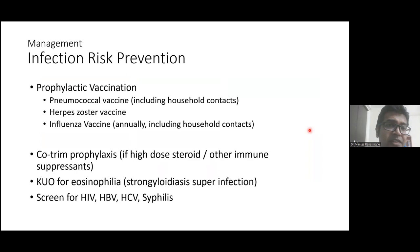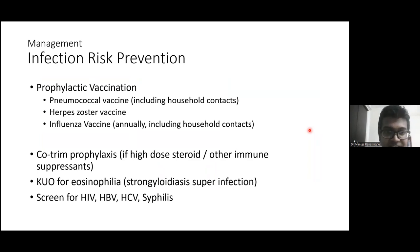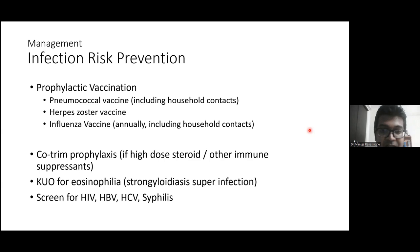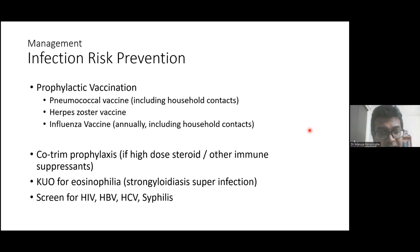Nephrotic patients have a high susceptibility to infections. Preventive measures include prophylactic vaccinations: pneumococcal vaccine, herpes zoster vaccine, and influenza vaccine. The latest guidelines also suggest cotrimoxazole prophylaxis, particularly for patients on high-dose steroids or other immunosuppression, to prevent PCP. Clinicians should also watch for parasitic infections such as Strongyloides hyperinfection. Screening for viral infections including hepatitis B, C, and HIV is essential both as a preventive measure and because these are potential etiological causes of secondary nephrotic syndrome.